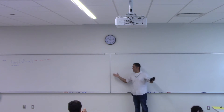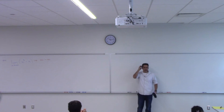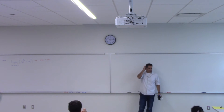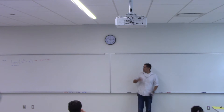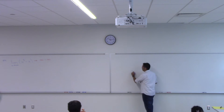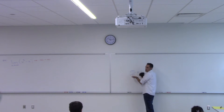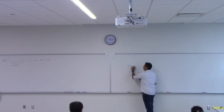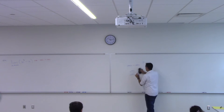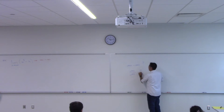Now 4 minus 4, yes, that's 0, but infinity minus infinity is not 0. Just for the same reason that infinity over infinity is not 1, right? It's we don't know. Infinity minus infinity is also we don't know.